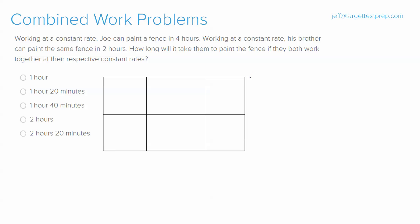Today we are going to be covering three variations of the combined work problem. Combined work is a type of problem you'll see in work questions. Work problems are similar to distance problems in that rate times time equals work. The formula we're using is: work of one person (WA) plus work of another person (WB) equals total work (TW).